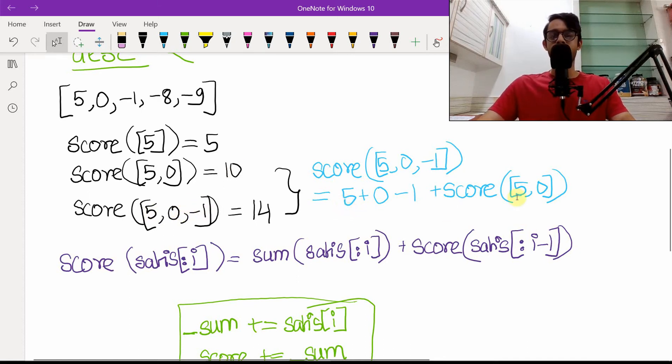We can write this down in a more abstract and general manner. The score of satisfaction up till i is the same as sum of satisfactions up till i. Basically saying that if you want to include the ith element, you have to include this ith element in the sum plus whatever the previous score was. This is why it's a DP problem. You can see that we're depending upon the previous solutions to build upon the future solution.